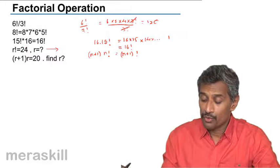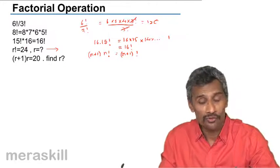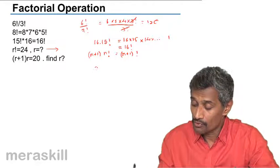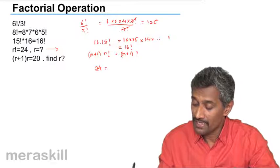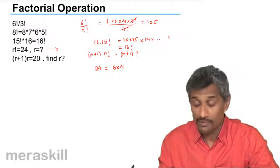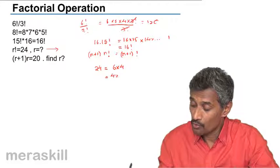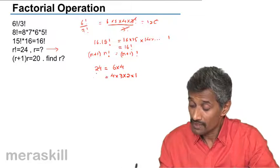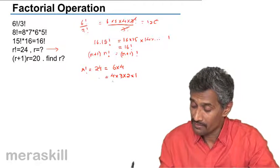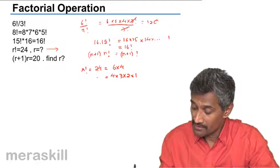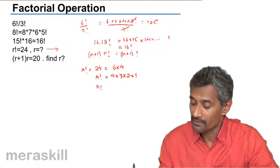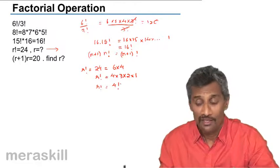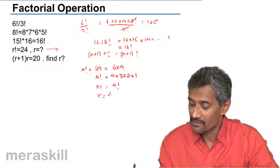Let's take the example: R! = 24. What should R be? 24 can be written as 4 × 6, or more precisely as 4 × 3 × 2 × 1, which is 4!. So R! = 4!, which means R = 4.